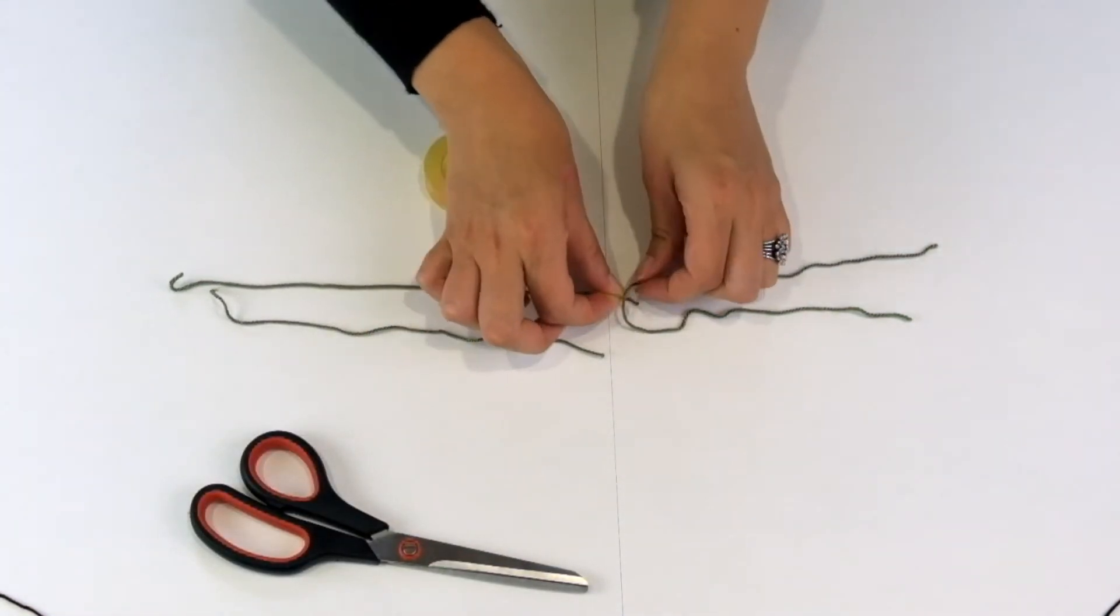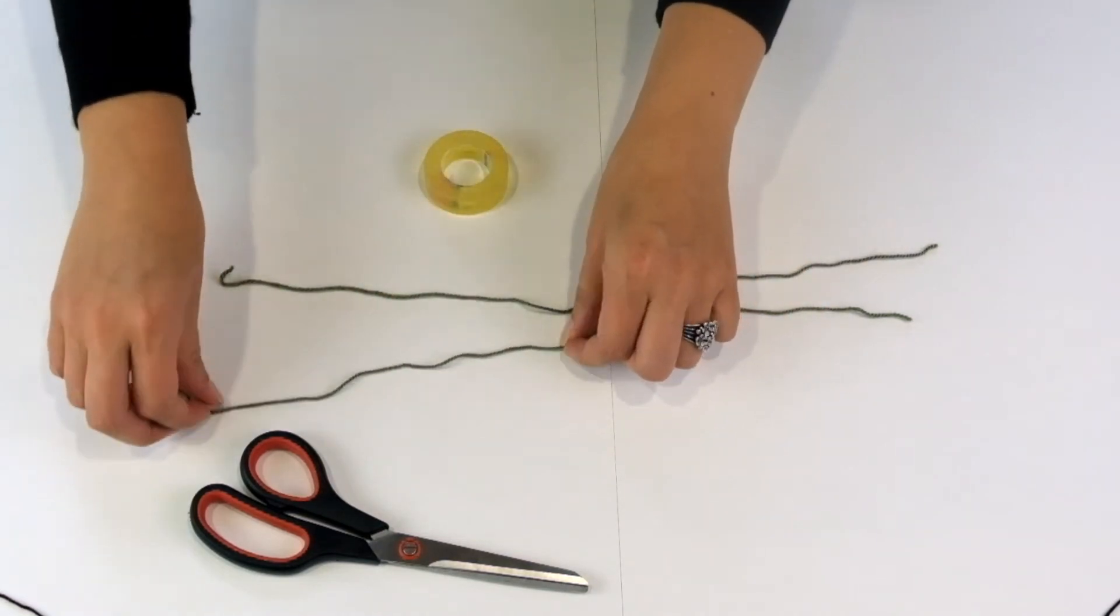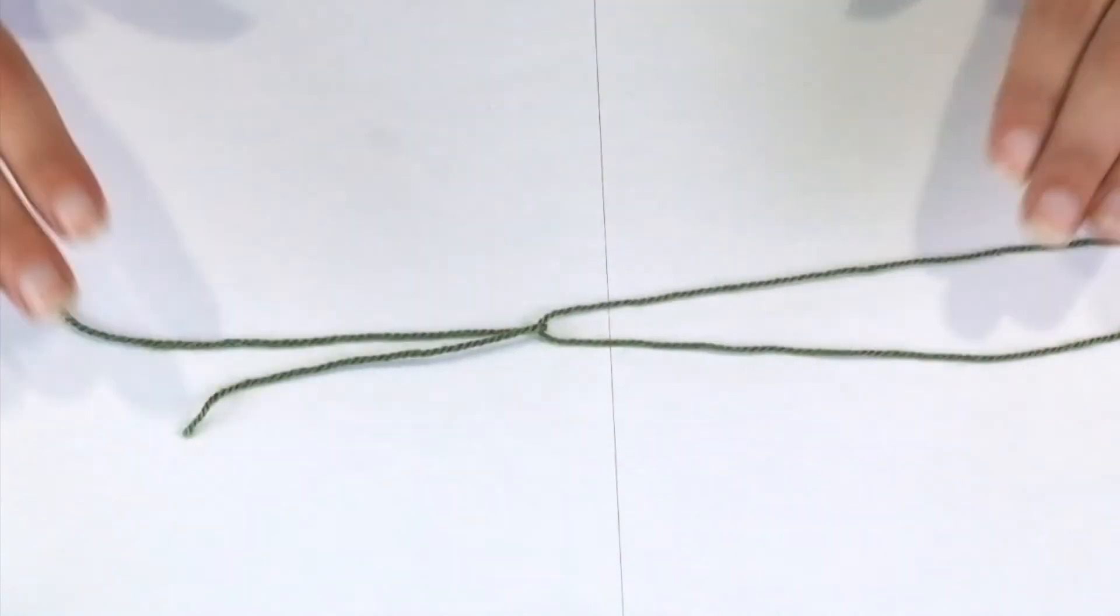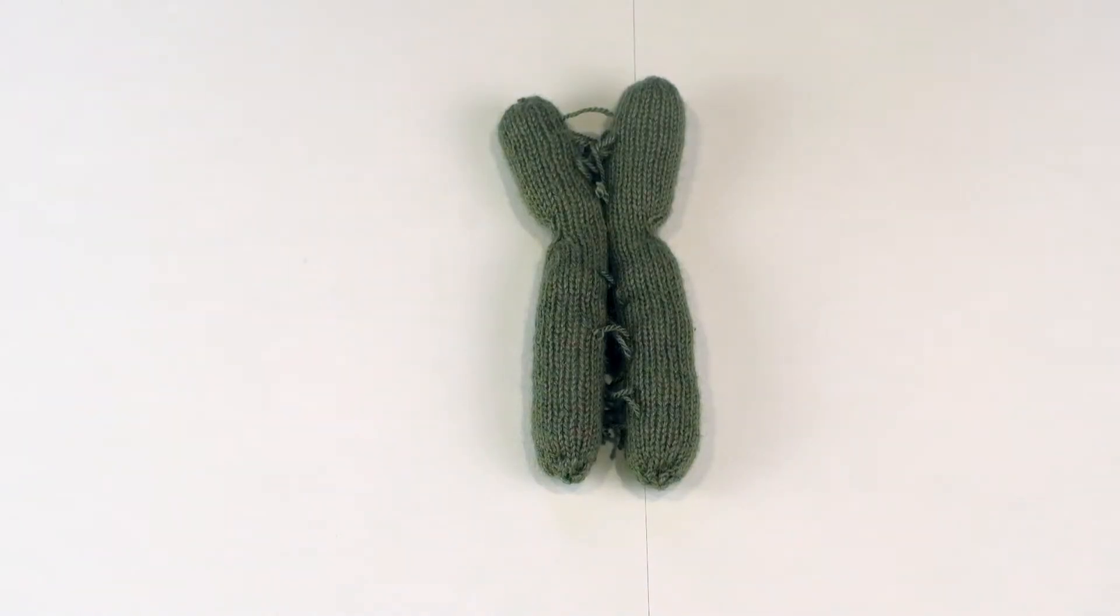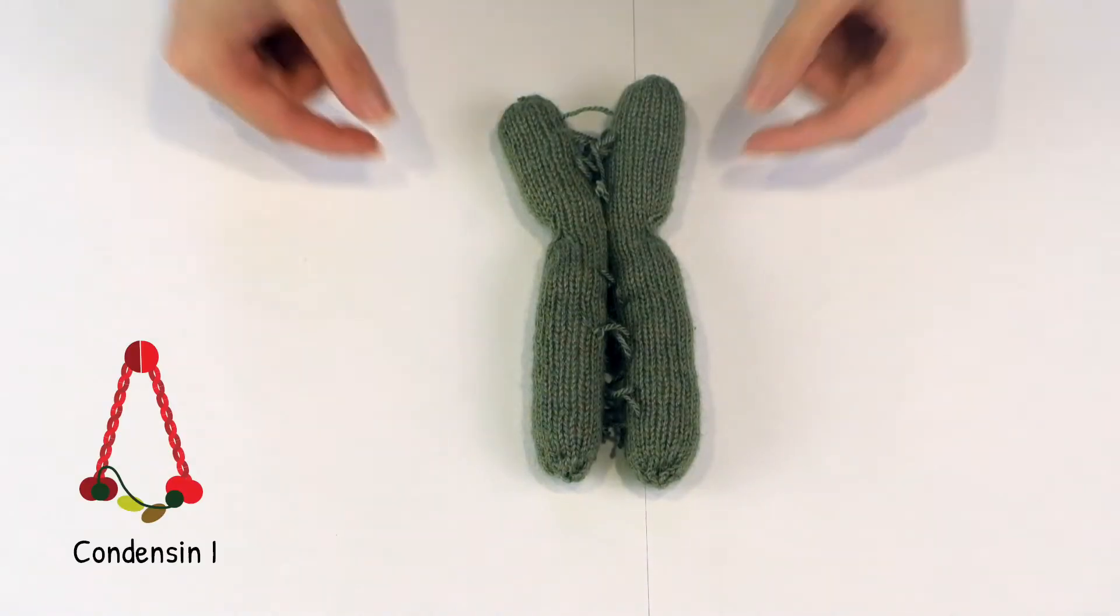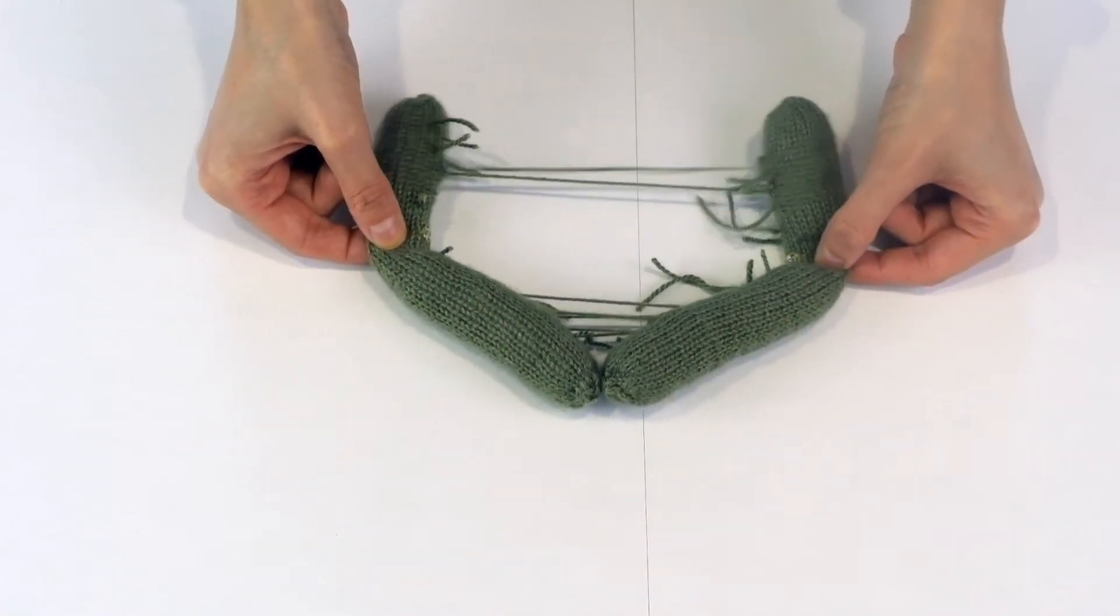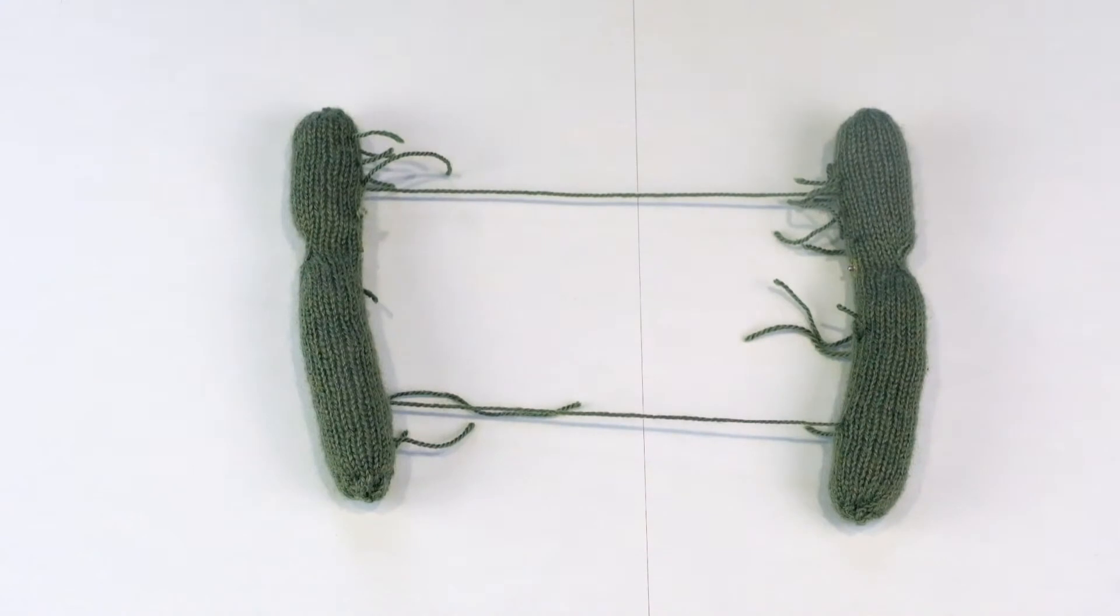On the other hand, Condensin-1 works here as a guide by directing which way to go in order to separate DNA molecules. We observed that when this guiding complex is removed from the already formed chromosomes, cells are unable to separate their DNA molecules with drastic consequences to the cell.